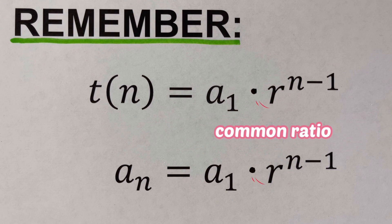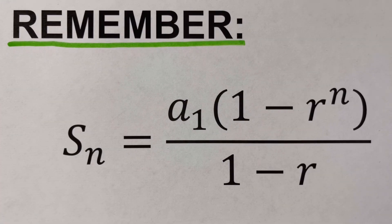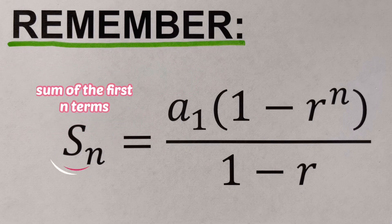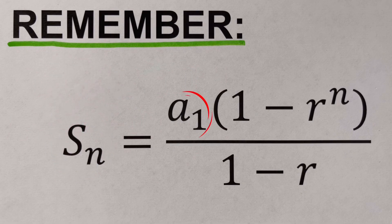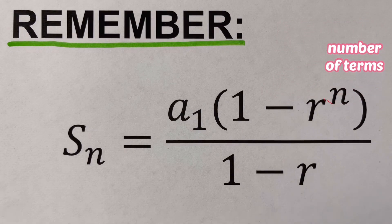Our r is the common ratio. The second formula is used to determine the sum of the first n terms of a geometric series. This is represented as S sub n equals a sub 1 times the quantity (1 minus r raised to the power n) over (1 minus r), where S sub n is the sum of the first n terms, a sub 1 is the first term, r is the common ratio, and n is the number of terms.